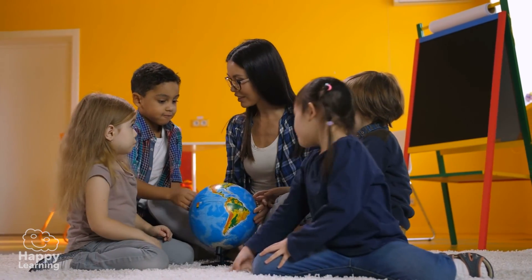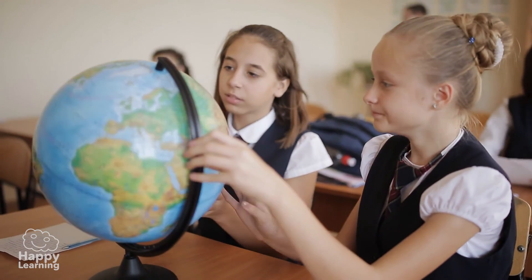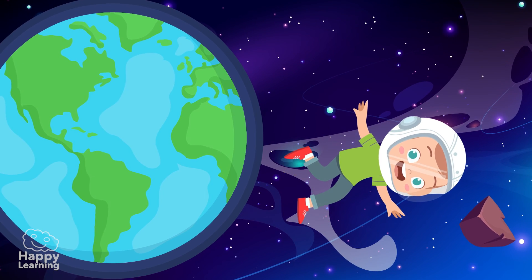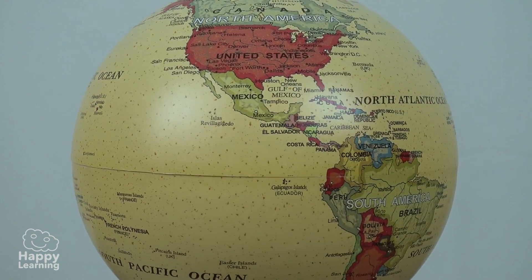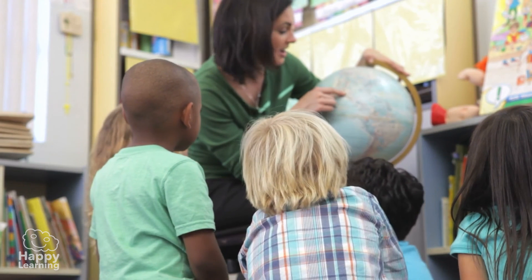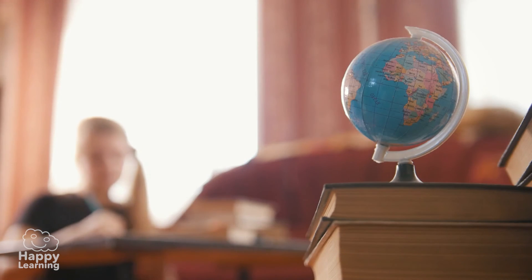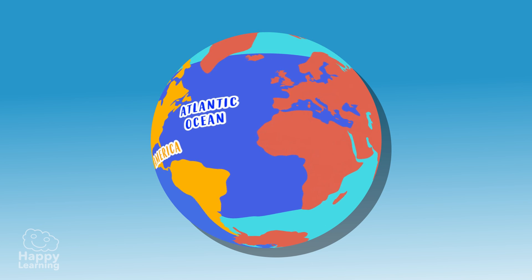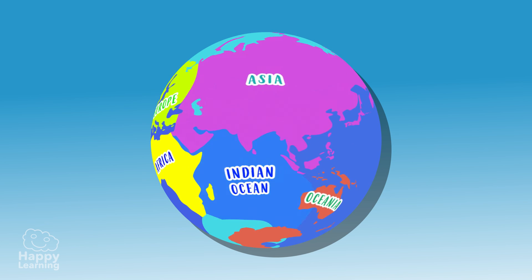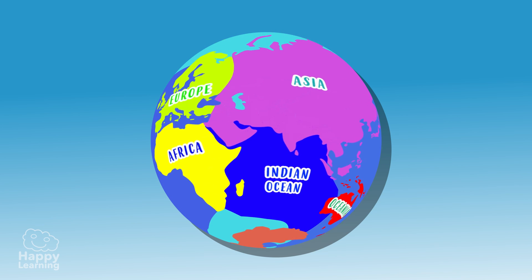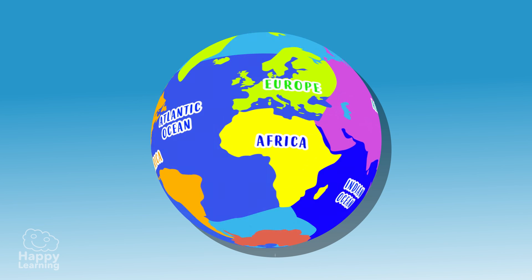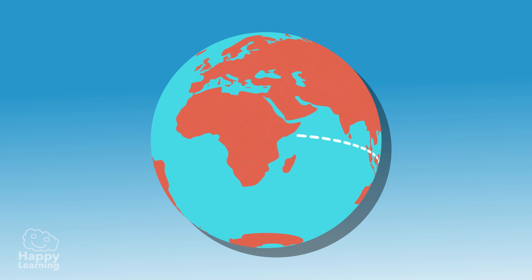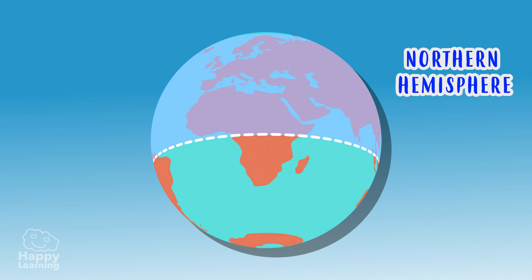If we didn't have a globe to understand where Brazil is located on our planet, we would have to put on an astronaut suit and go into space! The globe is a sphere — an exact representation of the Earth, but in miniature form. It allows us to locate absolutely all the continents, islands, and oceans in their corresponding places. Incidentally, the oceans are always painted blue. The globe also allows us to divide the Earth into two halves: the northern hemisphere and the southern hemisphere.